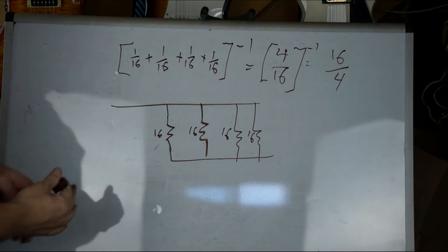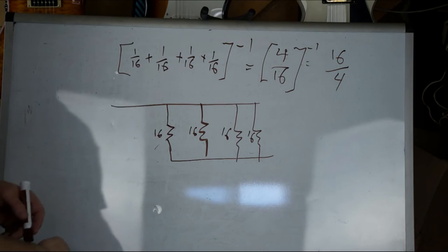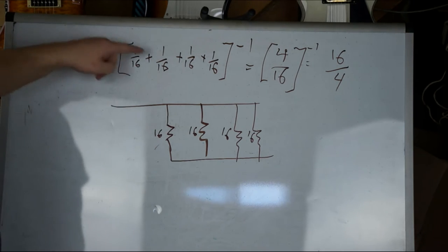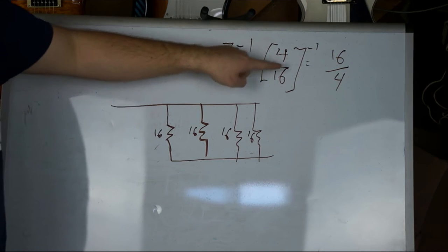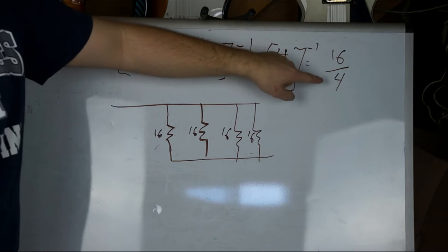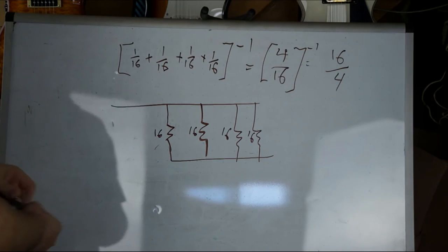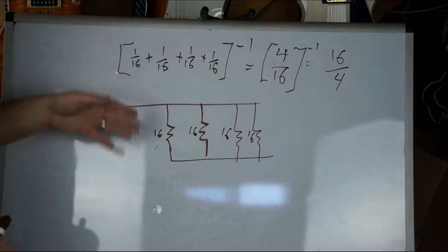You can do that with just two speakers also, right? Same kind of idea. You would just have one over 16 plus one over 16 is two over 16. To the negative one is 16 over two. And that's going to give you eight. So that's series and parallel.